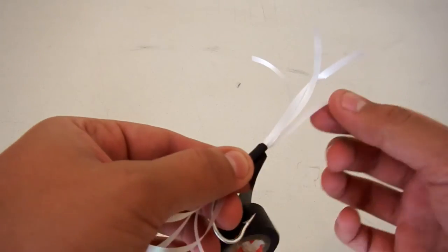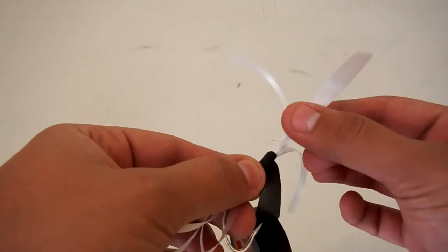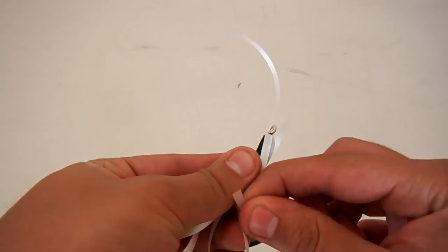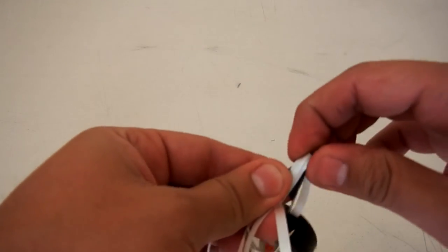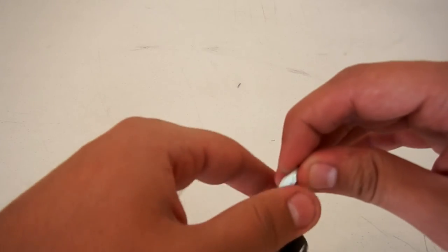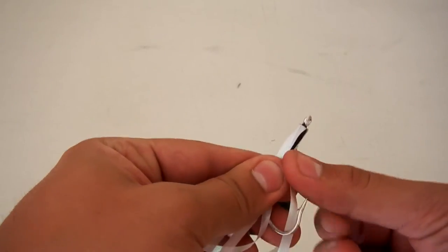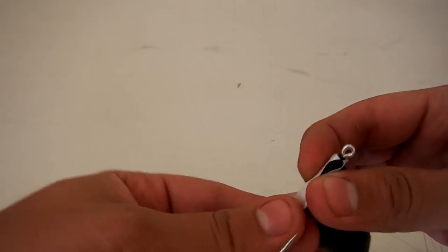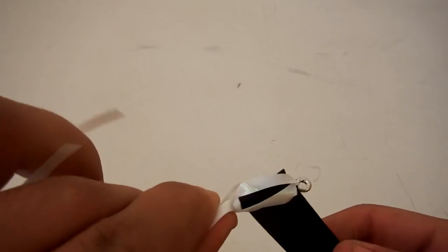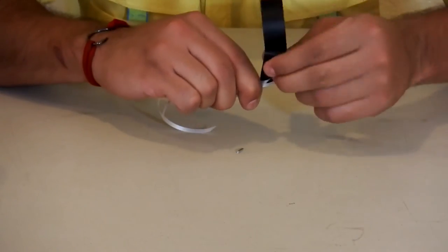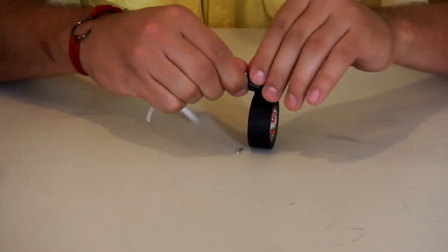What we're going to do is now we're going to fold these back, fold this back, as so. Hold them tight, and then we're going to go nice and tight around the shank again.